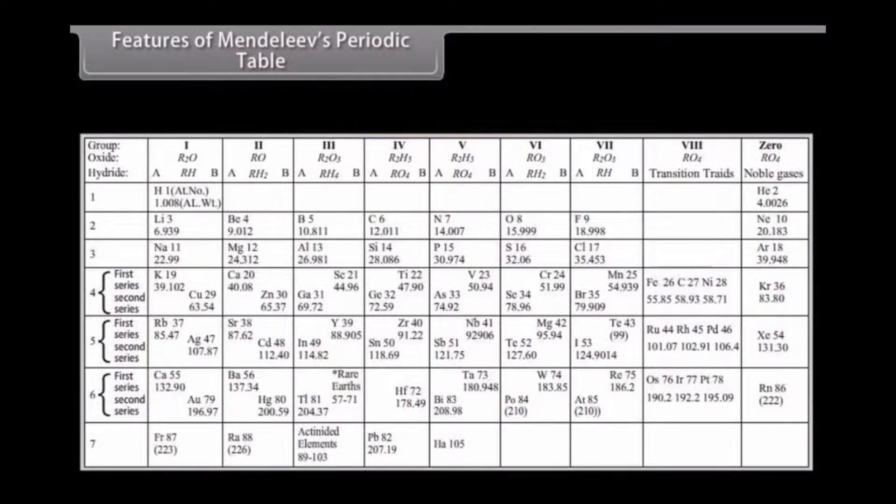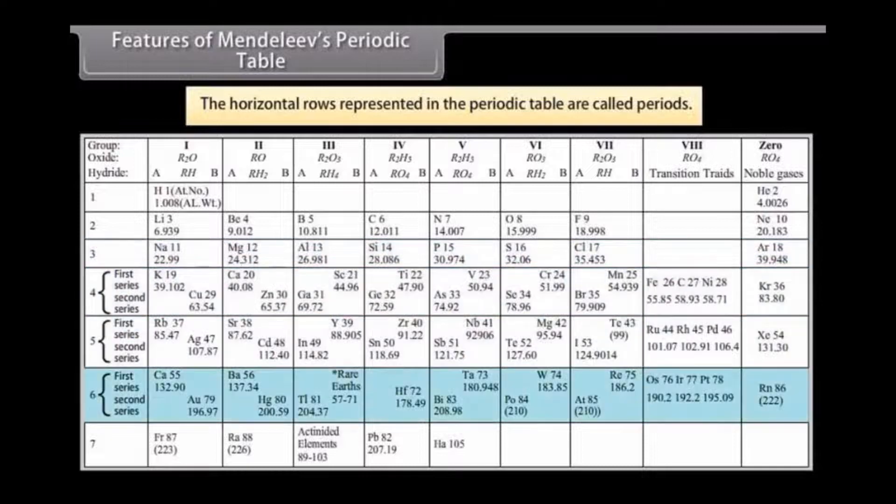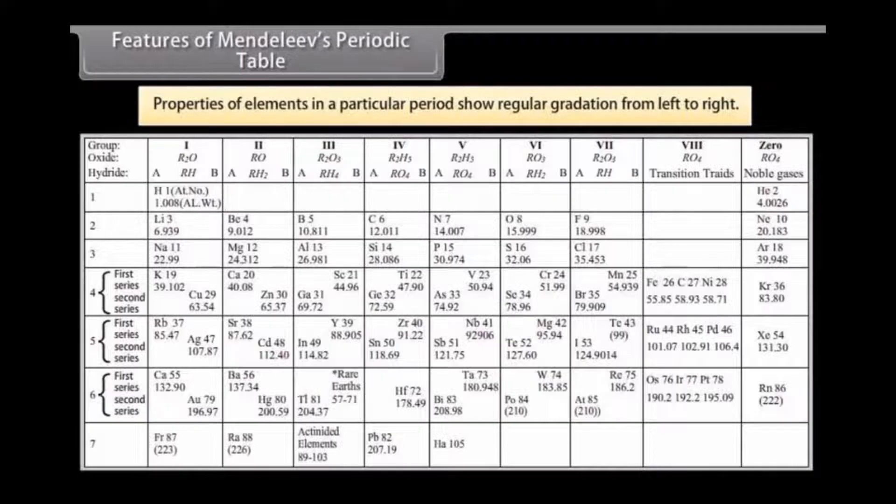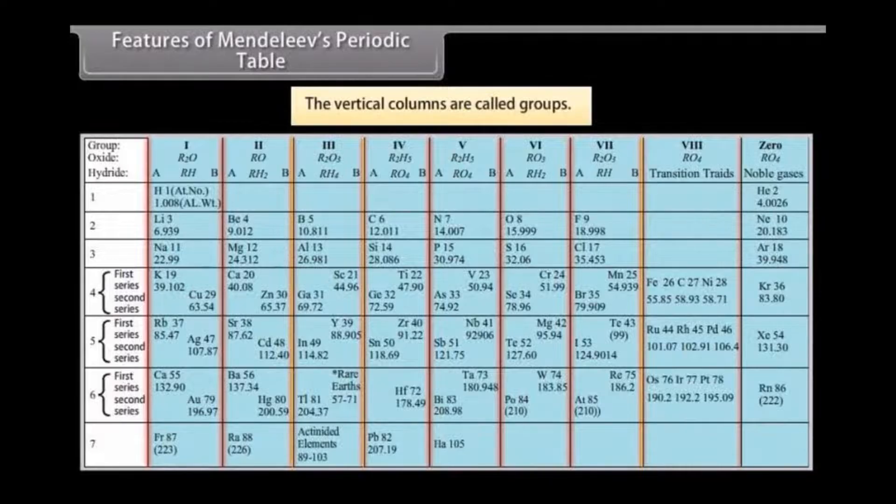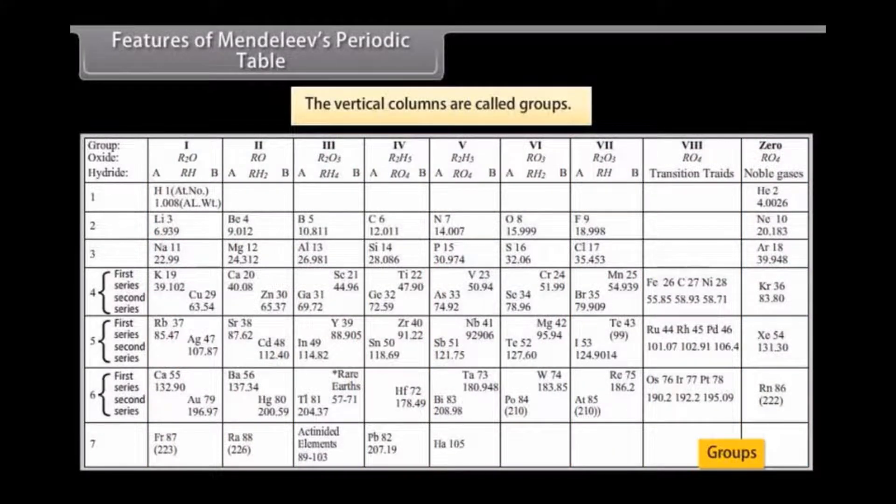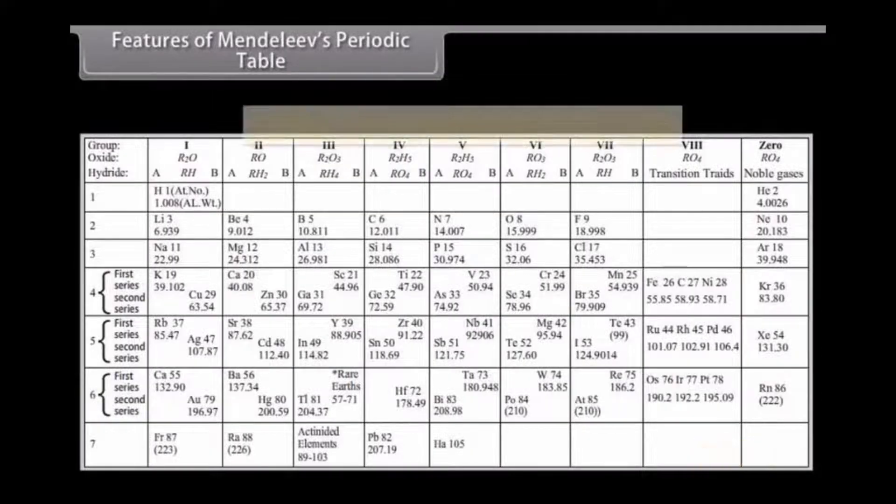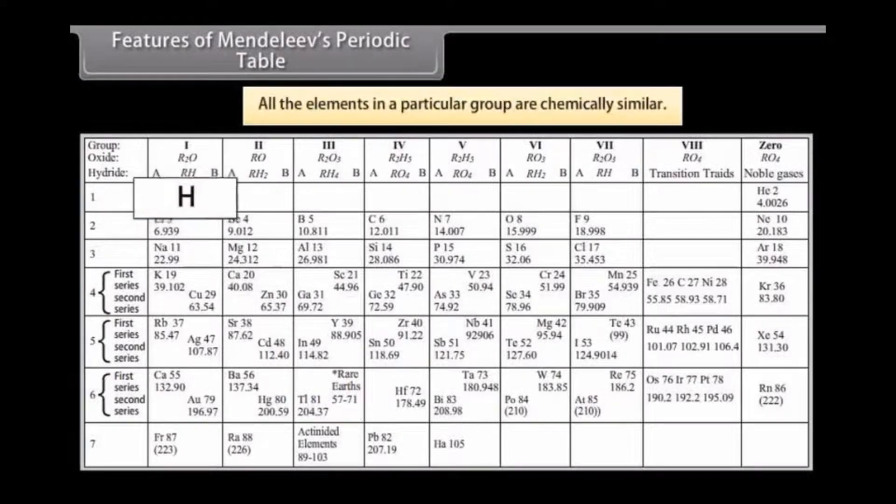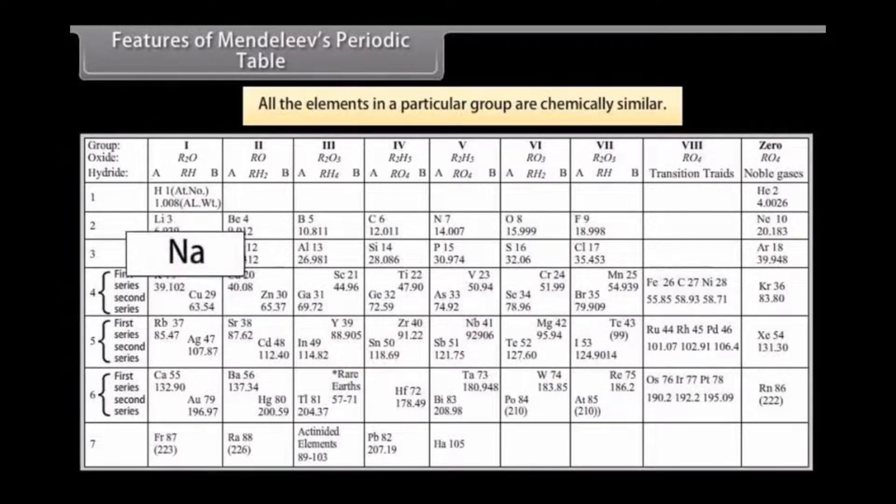Features of Mendeleev's periodic table. The horizontal rows represented in the periodic table are called periods. There are seven periods in the periodic table numbered from one to seven. Properties of elements in a particular period show regular gradation from left to right. The vertical columns are called groups. These groups are nine in number and are numbered from one to eight and zero. Groups one to seven are further divided into A and B subgroups. Groups zero and eight do not have any subgroups. All the elements in a particular group are chemically similar. They show regular gradation in their physical properties and chemical reactivities.